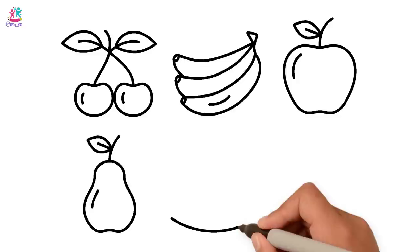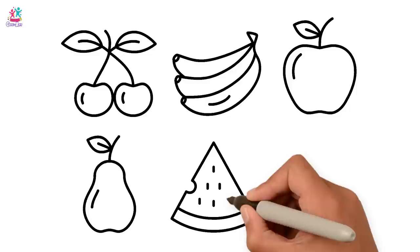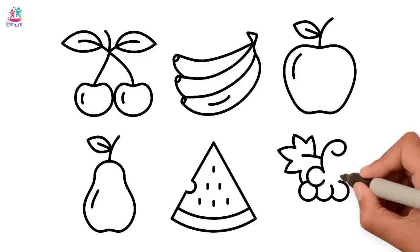And a slice of watermelon. That's right, so you've got a curvy bottom and a triangular top, some seeds. Last but not least, we're going to draw a bunch of grapes. Starting with the ziggy zaggy leaf and the stem and then lots of circles side by side, layering it like so.